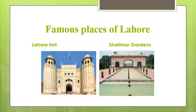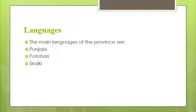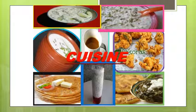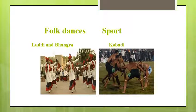The people of Punjab speak Punjabi, Potohari, and Seraiki languages, among others. The traditional foods are Pulao, Sarson Ka Saag, and Makki Ki Roti. Luddi and Bhangra are the traditional folk dances of Punjab. Kabaddi is the traditional sport and is very popular, especially in villages.